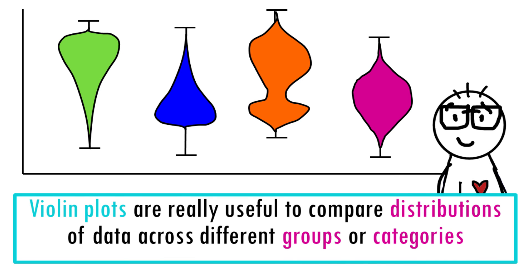In summary, violin plots are particularly useful for comparing the distribution of data across different groups or categories, allowing for easy identification of differences in central tendency, spread and skewness.